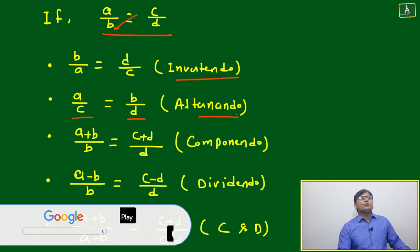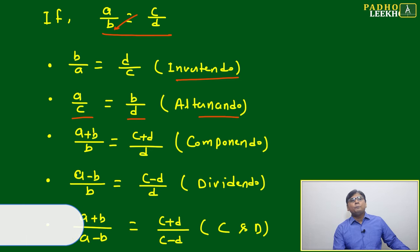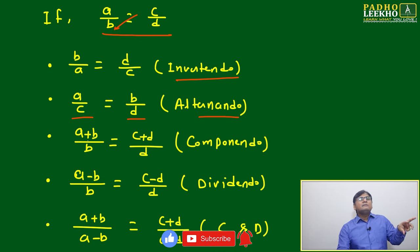will go here, then a by c will be equal to b by d. That is called alternendo. And just to add numerator and denominator and divide by either numerator or denominator, anything: a plus b divide by b, or